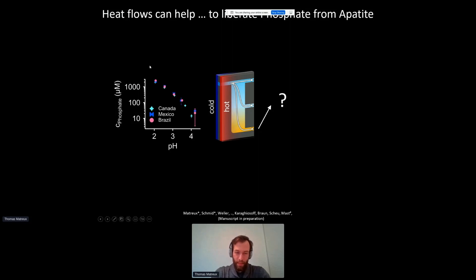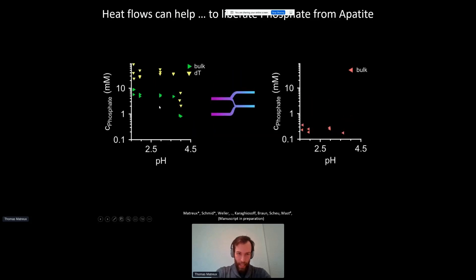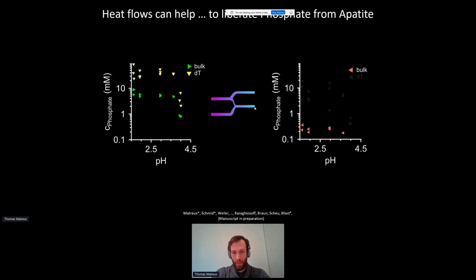We took the same dissolved apatite solutions, exposed them to the heat flow chamber, and looked at the bottom output. We found that the phosphate-to-calcium ratio is effectively enhanced by up to 60 percent — so instead of the typical apatite ratio of 0.6, we get up to 1 phosphate-to-calcium. After running through the heat flow chamber, phosphate concentration is enhanced up to six-fold, while calcium is enhanced less strongly. Even after re-neutralization, we end up with up to 10 millimolar of free phosphate at neutral pH when starting at pH 1.5 or 2.5.